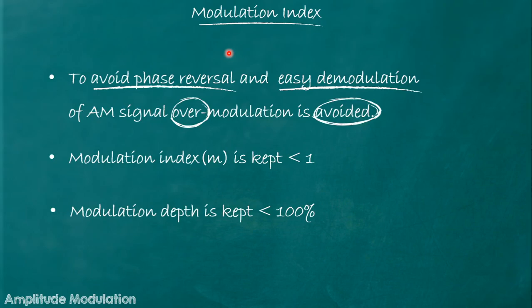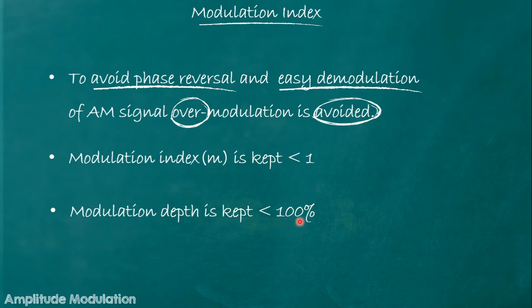To avoid phase reversal and to allow easy demodulation of the AM signal, over modulation is generally avoided. So modulation index m is kept less than 1, or in other words, modulation depth is kept less than 100%. Most of the time, under modulation is used.